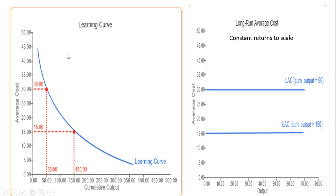Here's the learning curve on the left. We have average cost being measured on the vertical axis and cumulative output measured on the horizontal axis. So you can see for this firm, if in total it ever produced 50 units of output, its average cost would be $30.